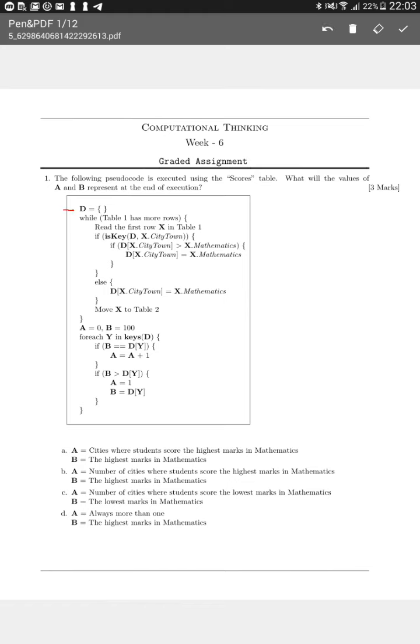In the first line we initialize an empty dictionary to the variable D, and then we enter this while loop. While table 1 has more rows, we read the first row X in table 1 and then we enter this if statement.